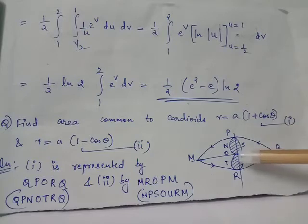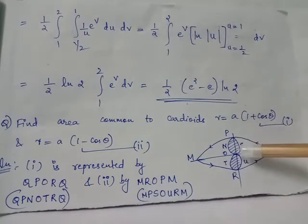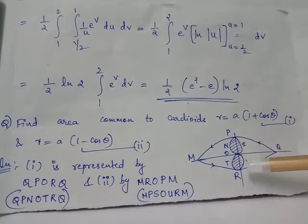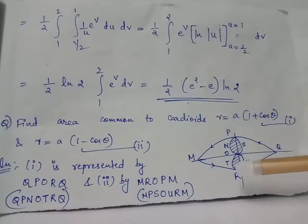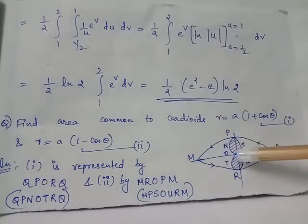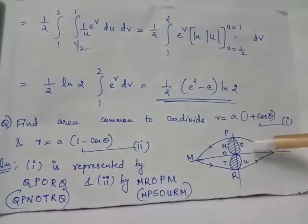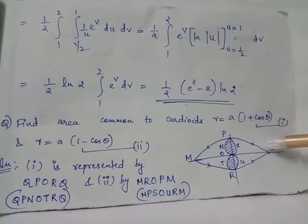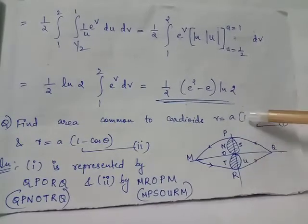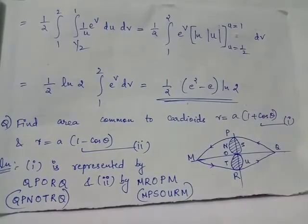OSP is the arc of the cardioid R equals A into 1 minus cos theta, and ONP is the arc of the cardioid given by the equation R equals A into 1 plus cos theta.